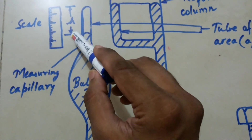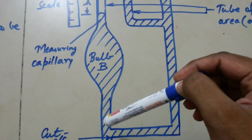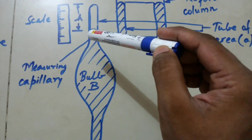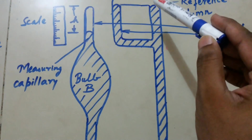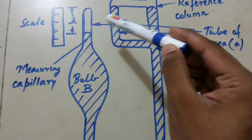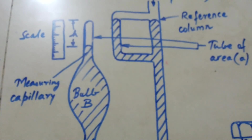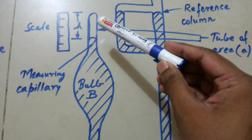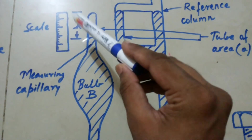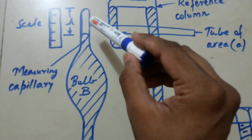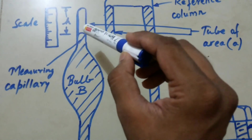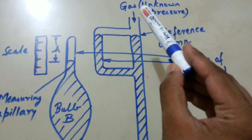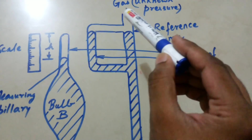We can calculate the pressure P2 using this height. We know the volume of the capillary tube. When the mercury is filled, we know the pressure with the help of this height and we know the volume of this particular section, so we can find the pressure of the gas that was earlier unknown.